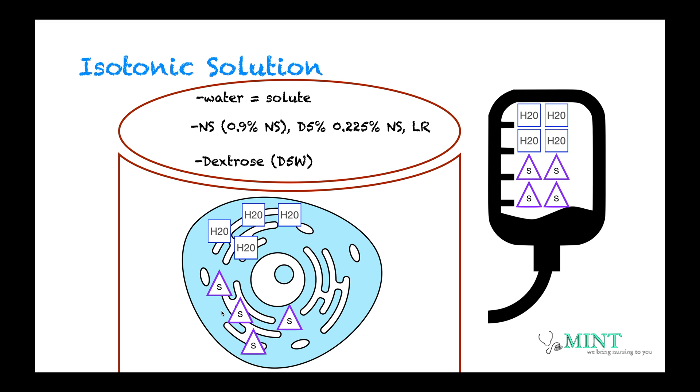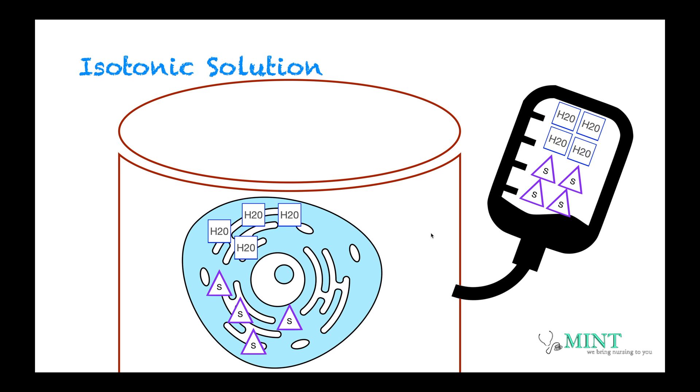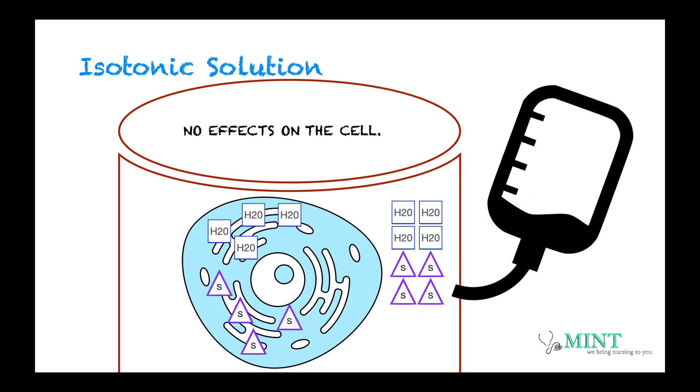Let's see what happens when we administer an isotonic solution inside our body. The concentration of the isotonic solution is similar to the concentration of the intracellular part of the cell. So when this isotonic solution gets in our body, there is no effect on the cell because the concentration outside the cell is equal to the concentration inside the cell. It only adds fluid volume outside the cell. So that's our isotonic solution.